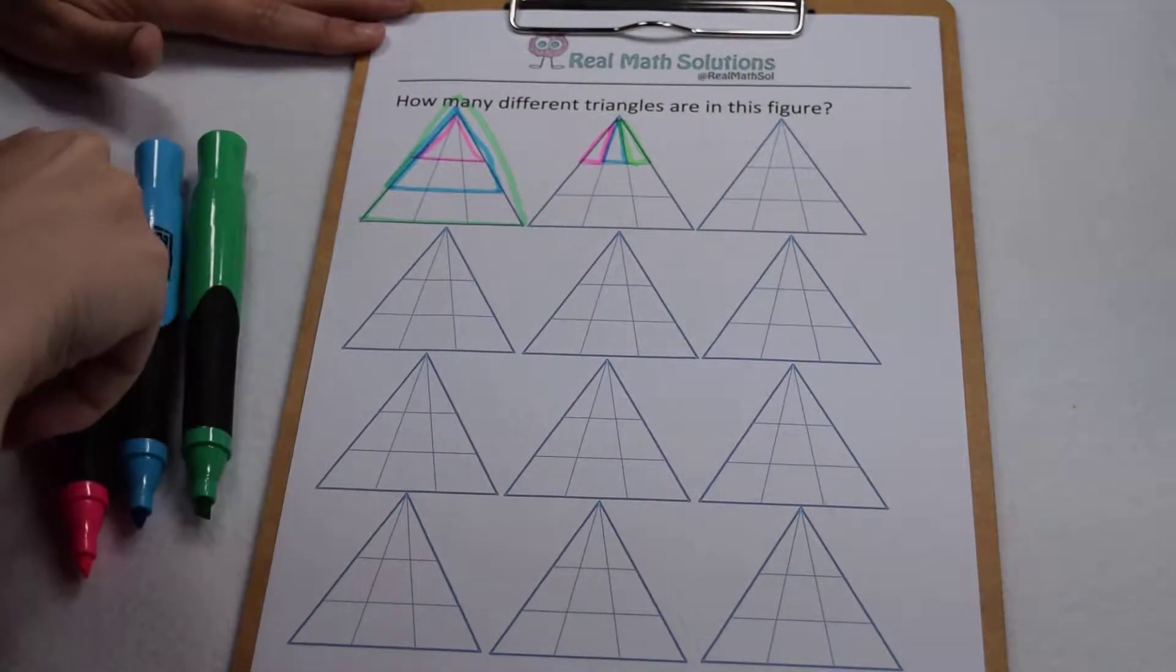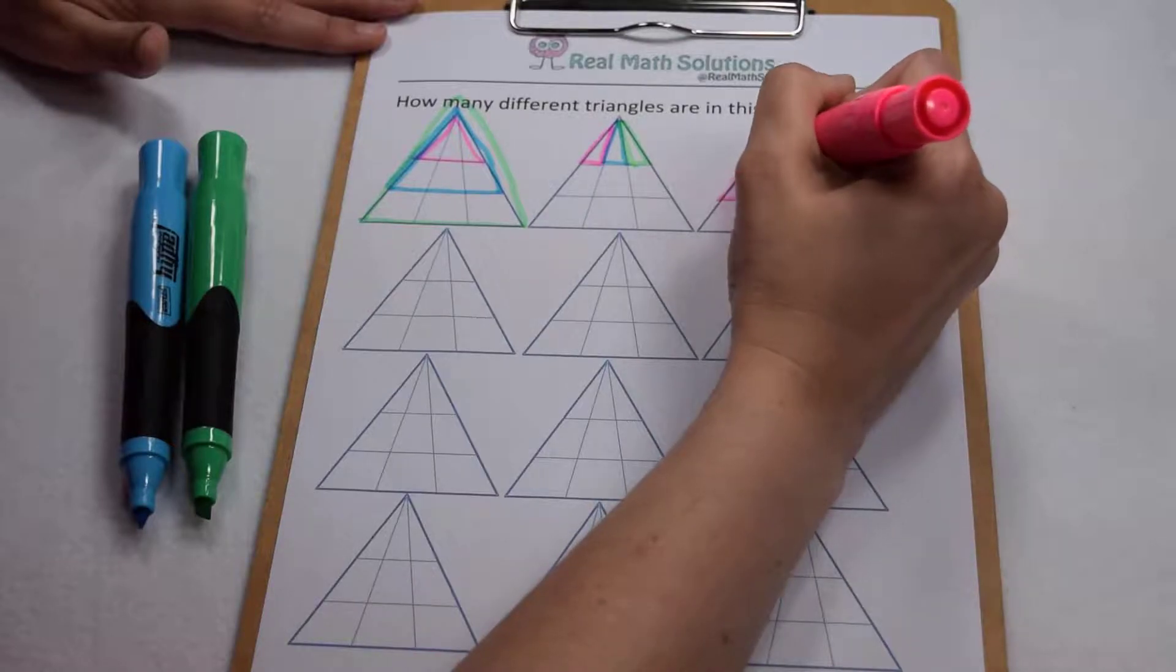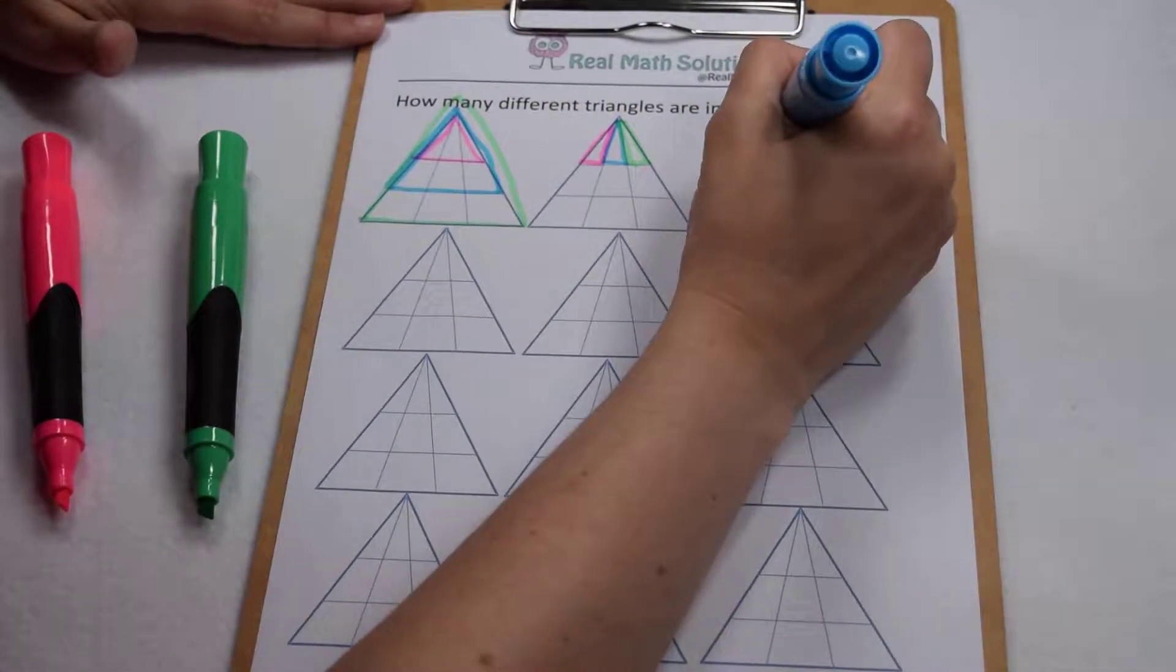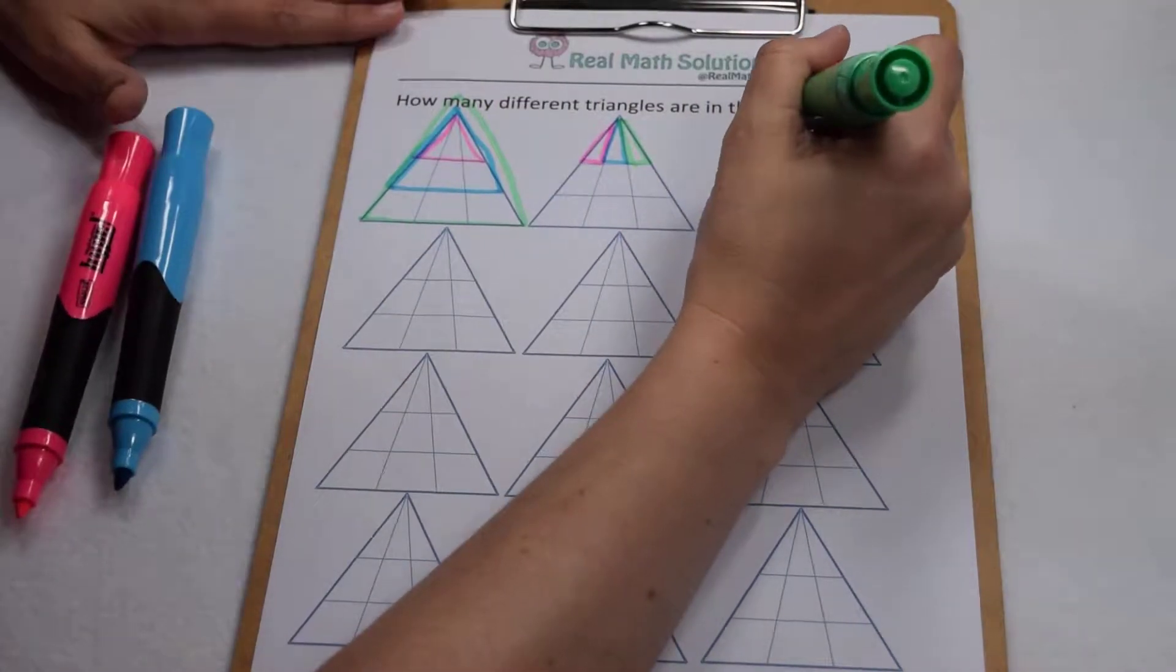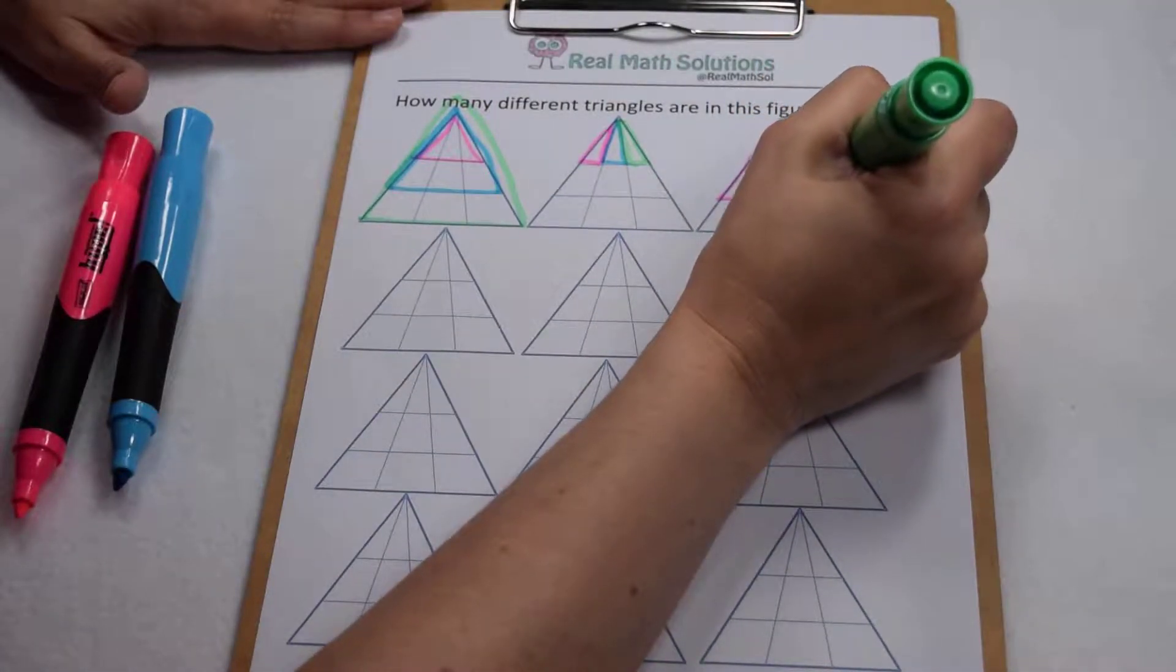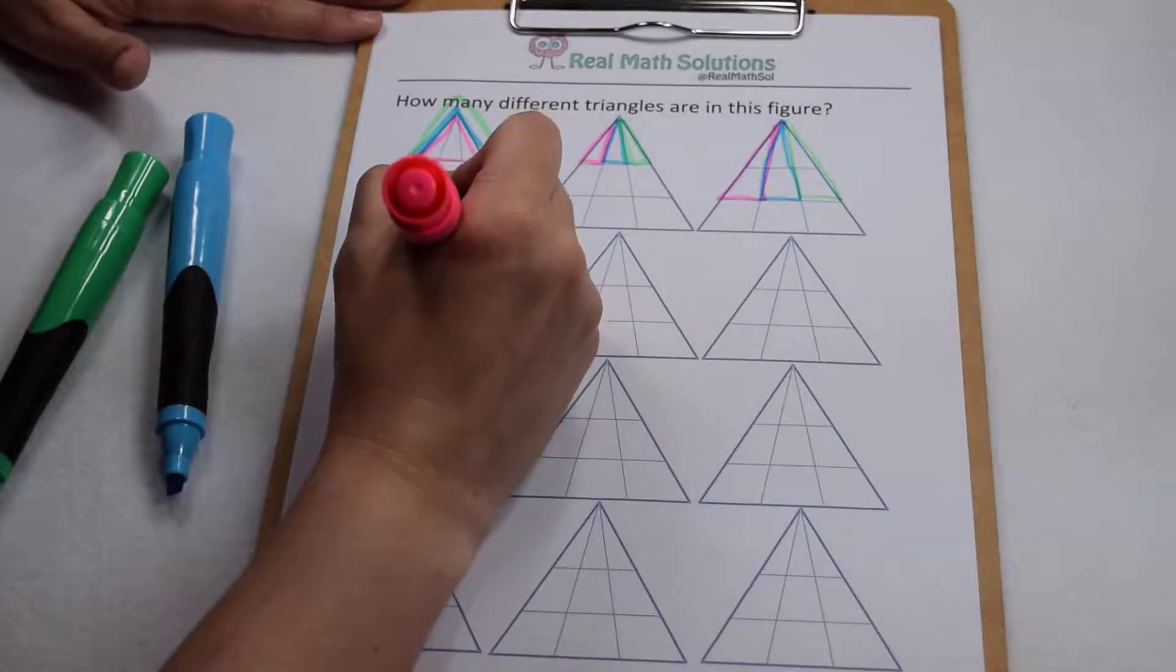Keeping that pattern going, we can do that same thing using two levels. Here's one piece, here's two pieces, and here's three pieces, and then we can extend that pattern all the way down to the bottom of the triangle.